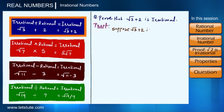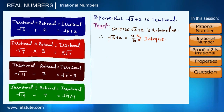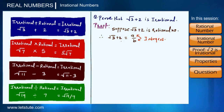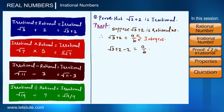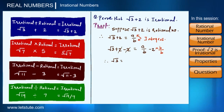Let's suppose root 3 + 2 is a rational number, so we can write root 3 + 2 = a/b. To isolate root 3 on the left side, subtract 2 from both sides: root 3 = a/b − 2. Multiplying and dividing by b, this becomes root 3 = (a − 2b)/b.